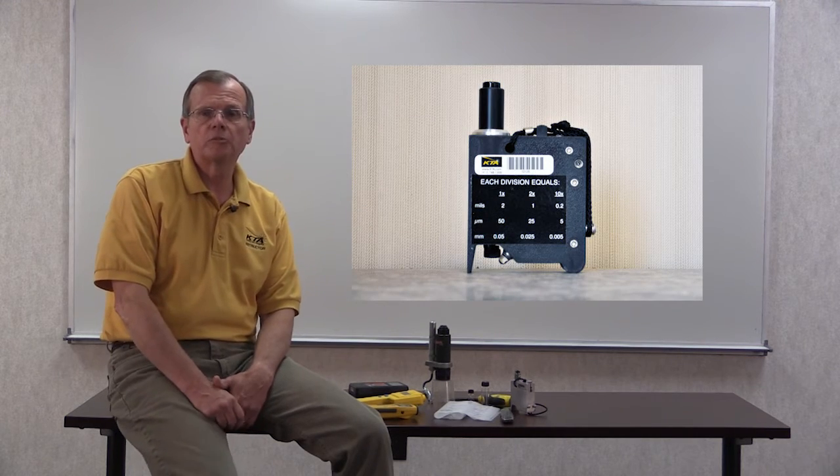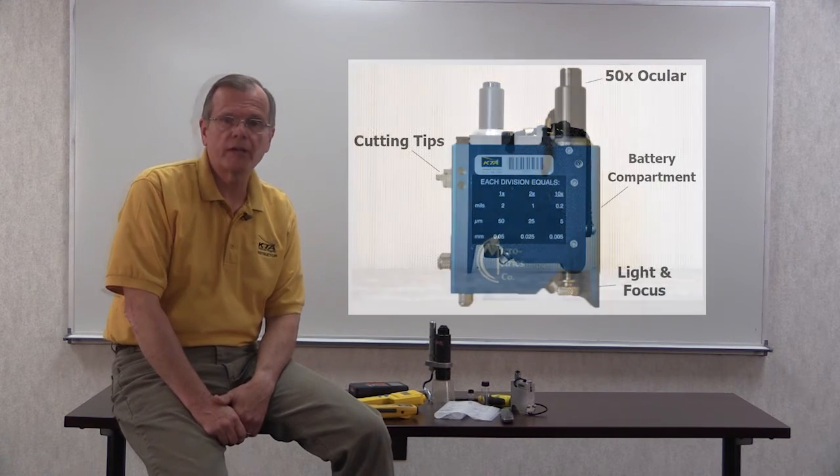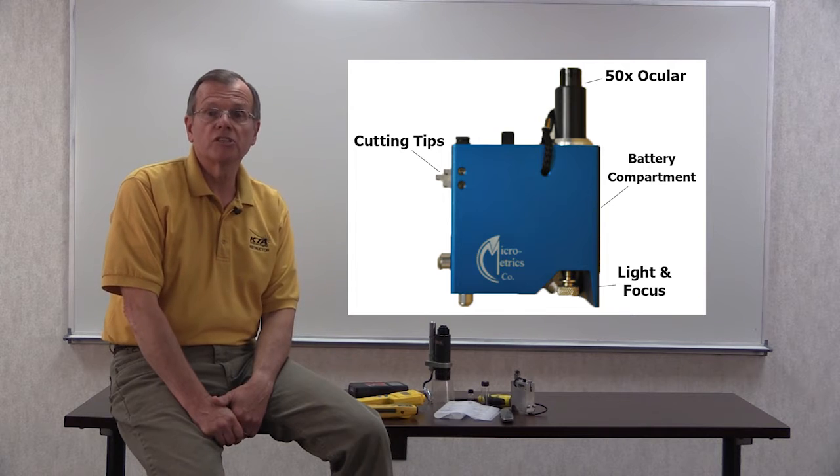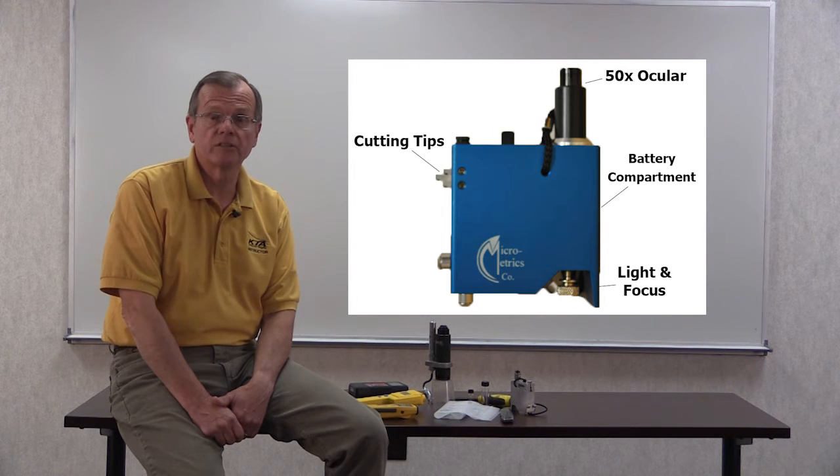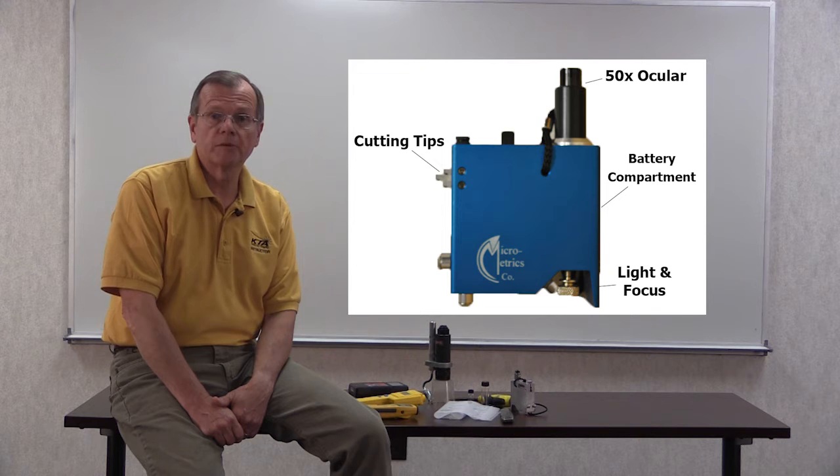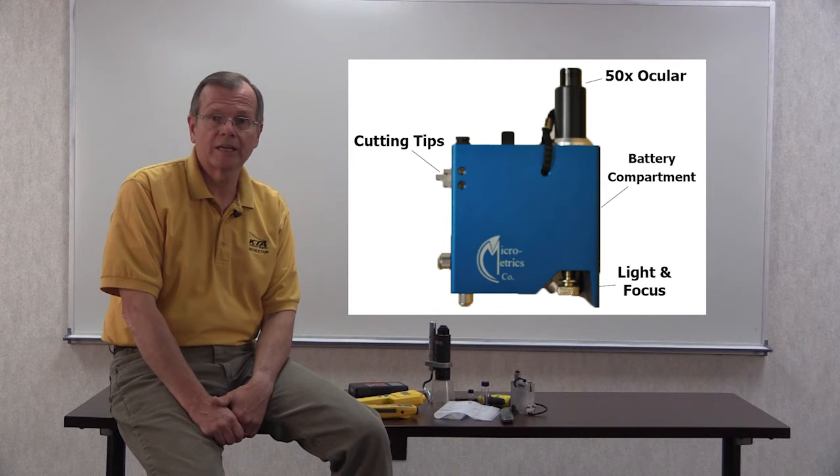The TUC gauge conforms to ASTM D4138. The gauge consists of a gauge body and a battery compartment, a 50 power illuminated ocular with a scale etched into the lens, a focus adjustment for the ocular, and three tungsten carbide precision cutting tips.